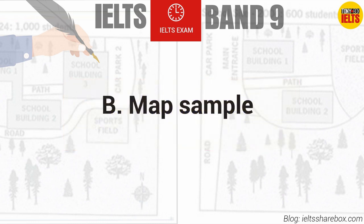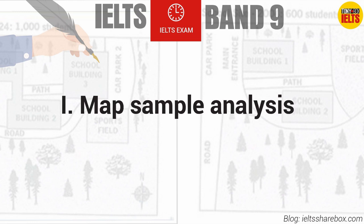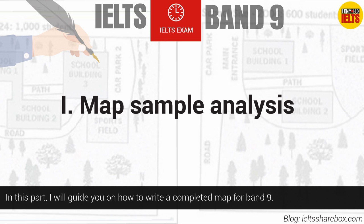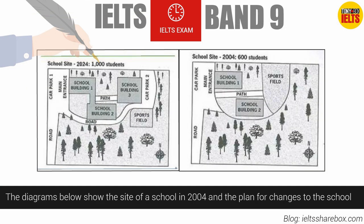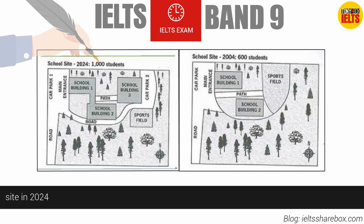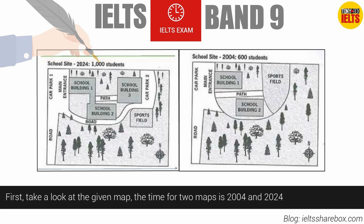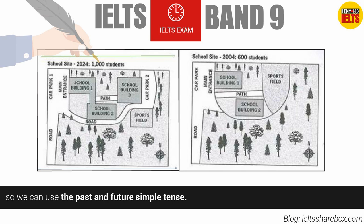Now moving to Map Sample 1 and the map sample analysis. In this part, I will guide you on how to write a complete map response for band 9. The diagrams below show the site of a school in 2004 and the plan for changes to the school site in 2024. The time for the two maps is 2004 and 2024, so we can use the past and future simple tense.